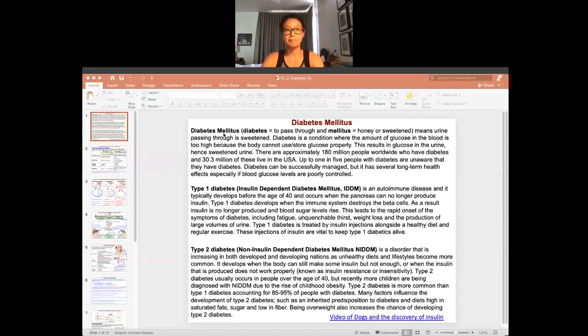So, diabetes mellitus. The term 'diabetes' actually means to pass through—it's a urine-related term. There are many forms of diabetes, including diabetes insipidus and others involving urine problems. But diabetes mellitus specifically means the urine passing through is sweetened like honey. 'Mell' means honey. So diabetes mellitus means the urine is sweet.